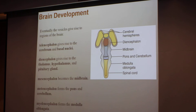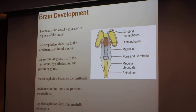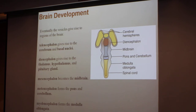So the brain development — the vesicles eventually give rise to regions of the brain. The question would be, for example, the cerebrum comes from the telencephalon, and the telencephalon comes from which vesicle? The prosencephalon, which is the forebrain. This is how you should study it — to know which one comes from which part.